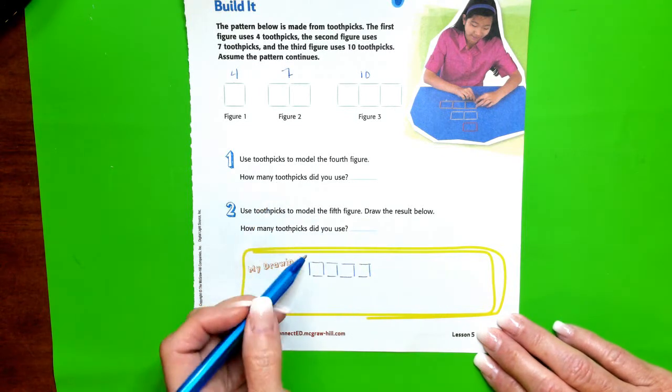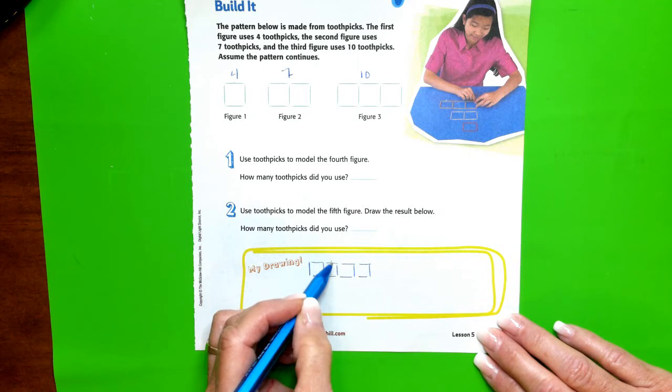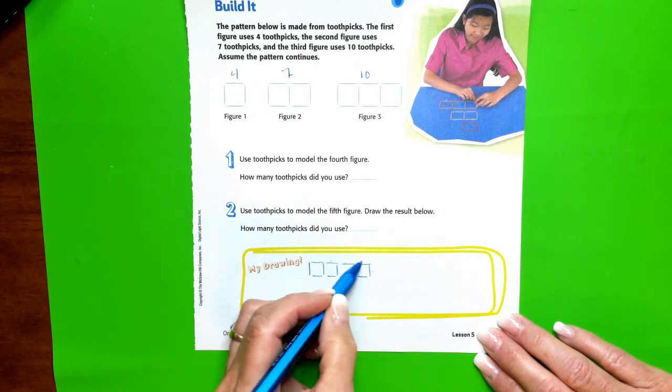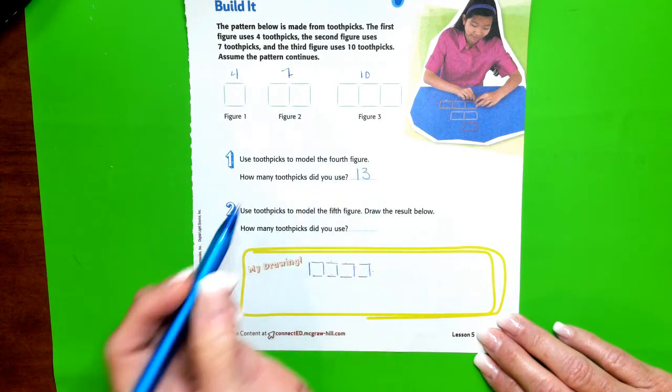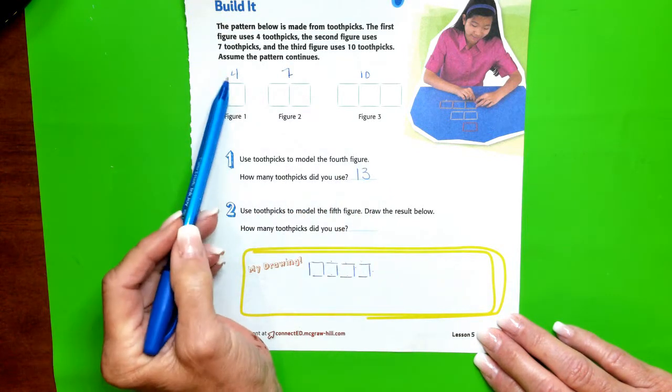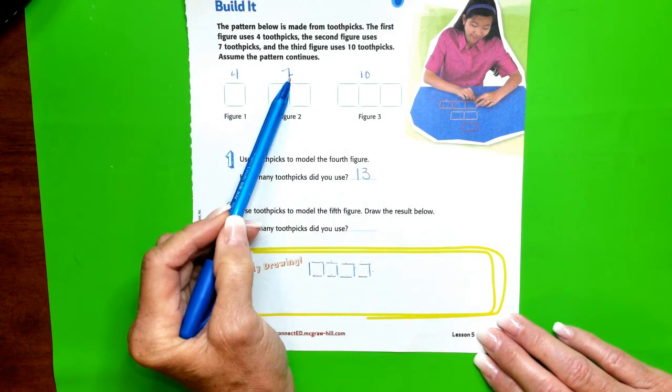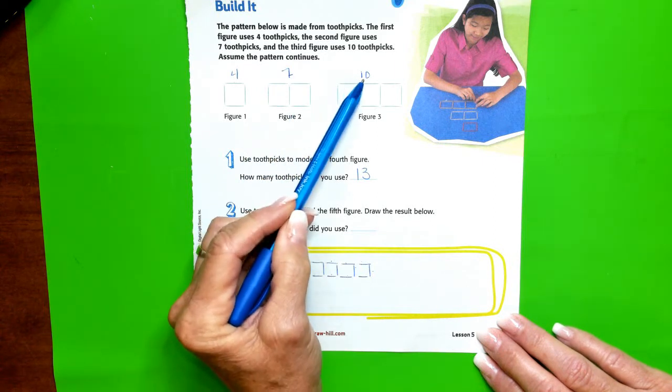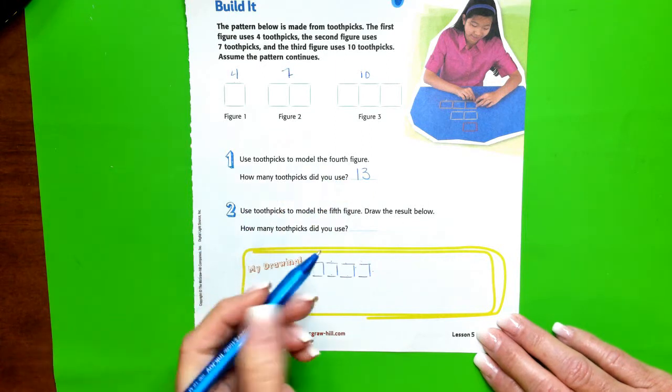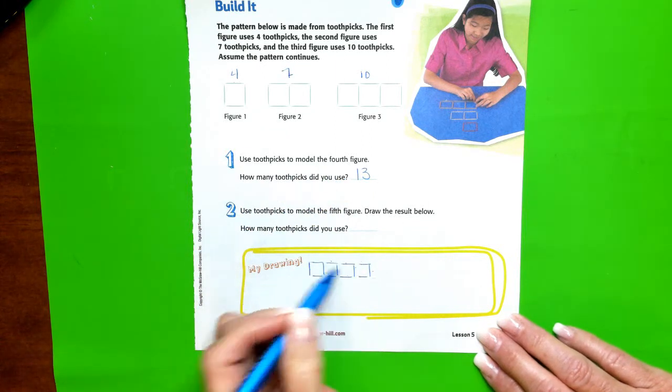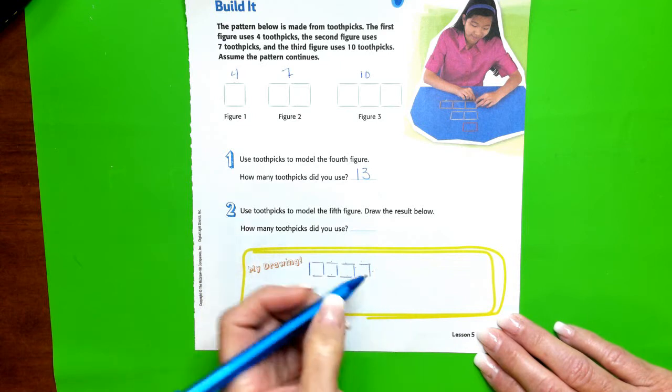How many toothpicks did we use? One, two, three, four, five, six, seven, eight, nine, ten, eleven, twelve, thirteen. We used 13. So in Figure 1 we had 4, Figure 2 we had 7, Figure 3 we had 10, and Figure 4 we had 13. Before I draw the next figure, how many do we think we're going to use?